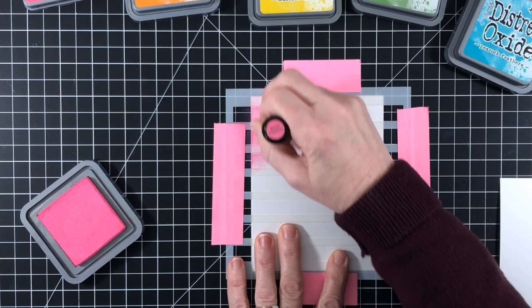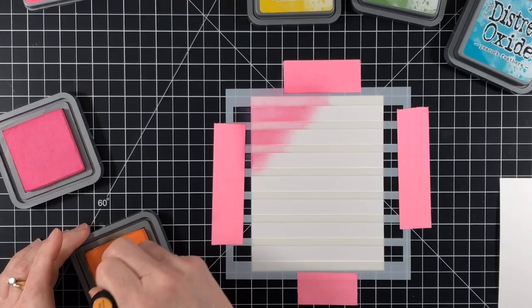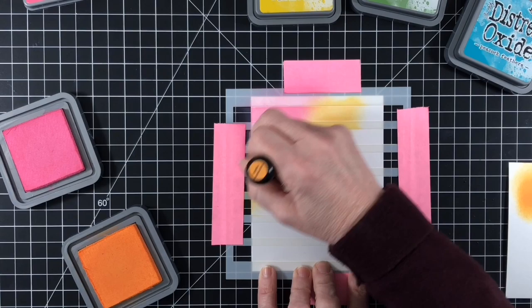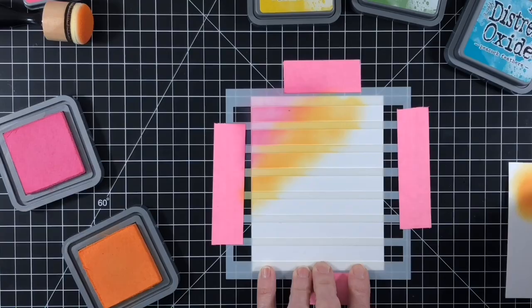And then I'm moving on to my next color, which is Spiced Marmalade. So I'll put the Spiced Marmalade down next and then I'm going to blend the Picked Raspberry and the Spiced Marmalade together so that I have a smooth transition between the two. I'm not going to be too fussy because I'm just doing stenciling today, but I want to make sure that there's no harsh lines in between.